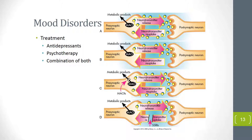Bipolar disorder, also called manic-depressive disorder, has a strong genetic component. Treatment may include mood stabilizers as well as antidepressants, though the use of antidepressants in bipolar treatment is somewhat controversial because they may exacerbate the manic episode.